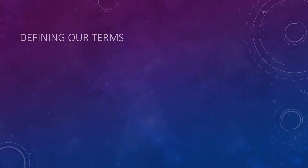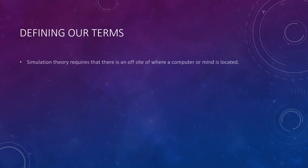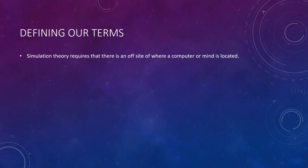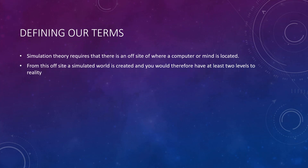So first, we need to define our terms. Simulation Theory requires that there is an off-site of where a computer or mind is located. From this off-site, a simulated world is created, and you would therefore have at least two levels to reality.